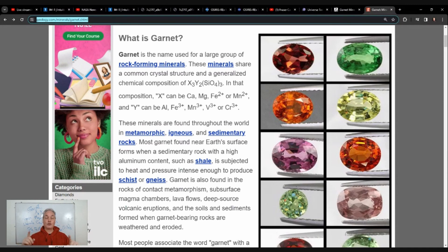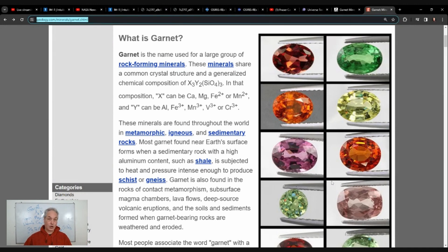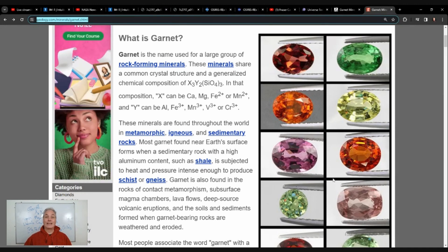Here we have almandine and pyrope - they're dark red here - but we also can have garnet of different colors. I know that garnet is the birthstone for one of the months during the year and I forget which one it is. Garnet has a variety of colors.